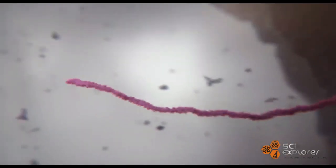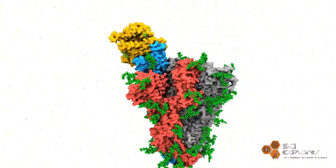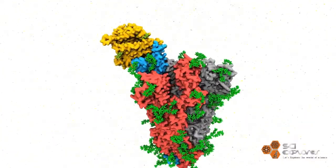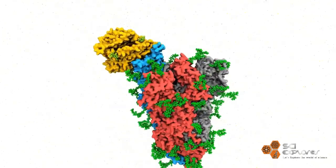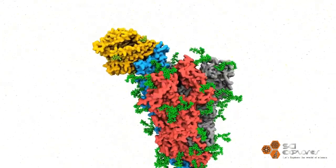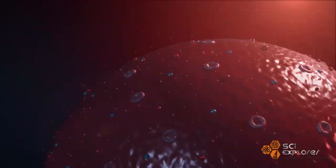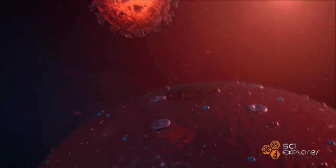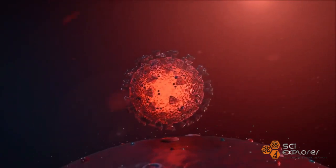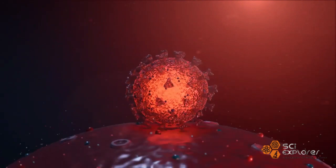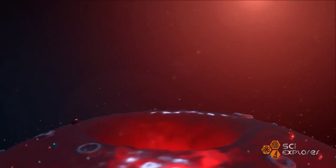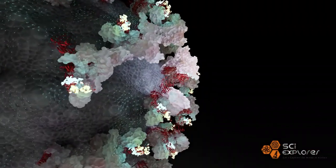SARS-CoV-2 spikes are flexible and hinge at three points, and that allows the spikes to flop around, sway and rotate. In such a way, these spike proteins scan the cell surface to find more binding sites.